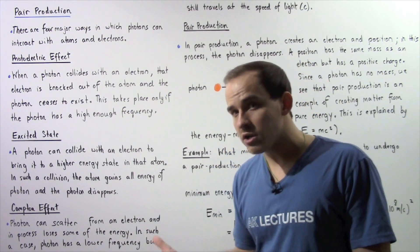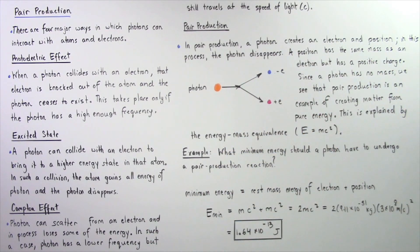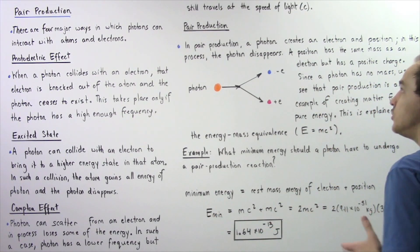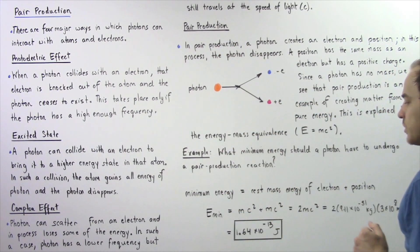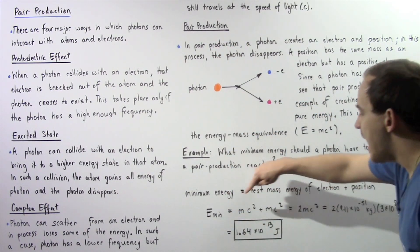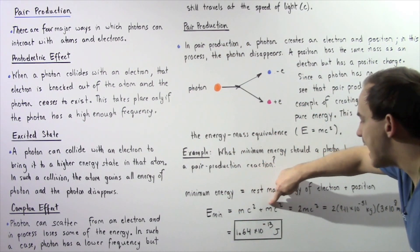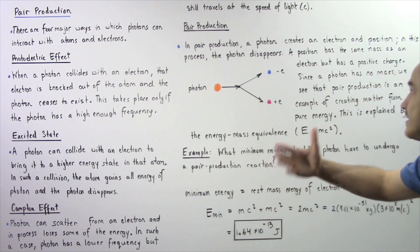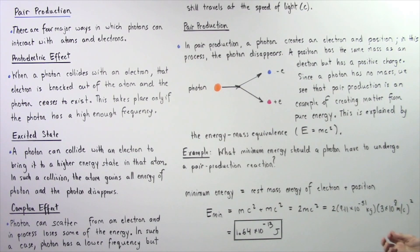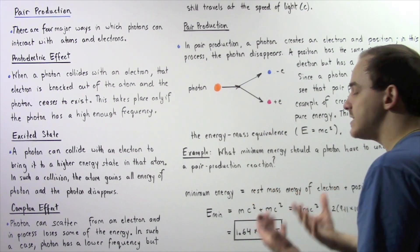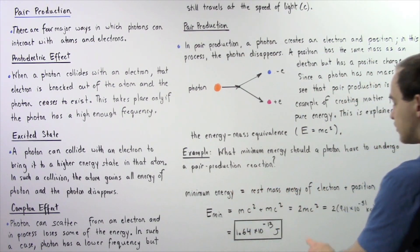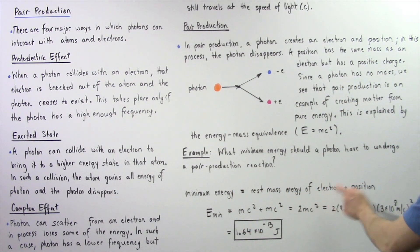where M is the mass of that particle and C is the speed of light. So the minimum energy that a photon has to have to undergo the pair production reaction is equal to MC squared plus MC squared, where M is the mass of the electron and M is the mass of our positron. Notice, they have the same exact mass, so these M's are equivalent, and we can combine that to 2MC squared.